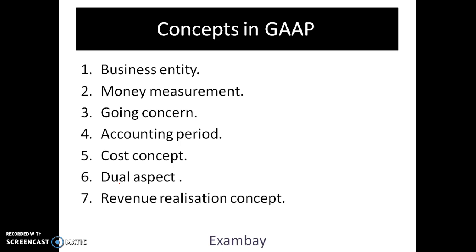The seventh one is the revenue realization concept. Revenue should be included in books only when it is realized. Revenue is a gross inflow of cash arising from sale of goods or services, interest earned, dividend earned, or commission earned by an enterprise. Revenue is realized when the legal right to receive it arises — so if I make a sale today, the bill date is today, and even if payment comes after 10 days, the sale is realized today.